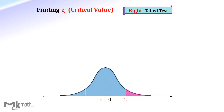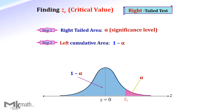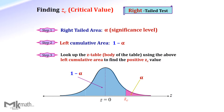Next, finding the z-critical value for a right-tailed test. Step 1: since this is a right-tailed test, the right-tailed area is given as the significance level alpha. Step 2: because we use the left cumulative z-table, and since the whole area is 1, the left cumulative area is 1 minus the significance level alpha. Step 3: find the corresponding z-score using that left cumulative area.